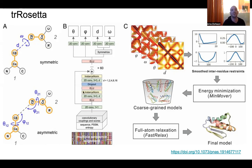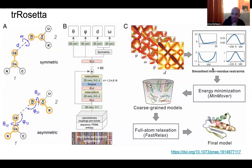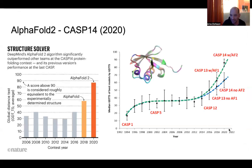It then runs a network — in this case iterating 60 times — to predict probability distributions over distances and backbone angles between residues. From these predicted distance and contact maps, it derives a potential describing the probability of each pair of residues being a certain distance from each other, applies gradient-descent minimization with a coarse-grained model, and then adds side chains to make a final model. This worked quite well — until AlphaFold2 arrived two years later, jumping from about 60 to 88 GDT-TS for hard targets, very close to experimental accuracy.